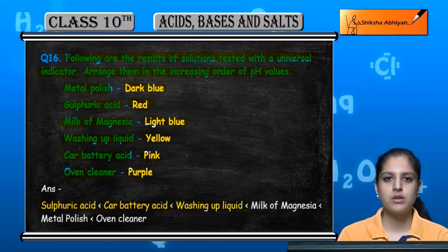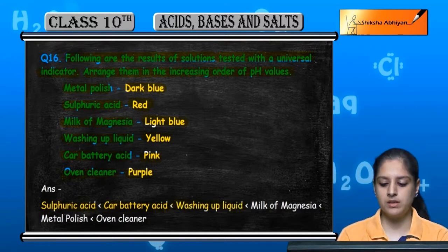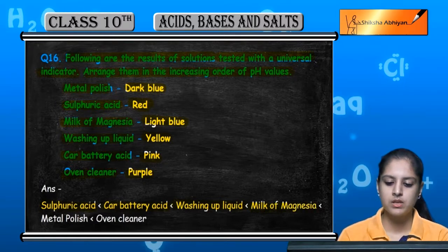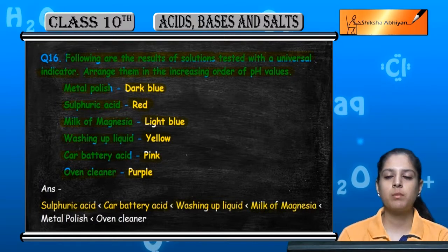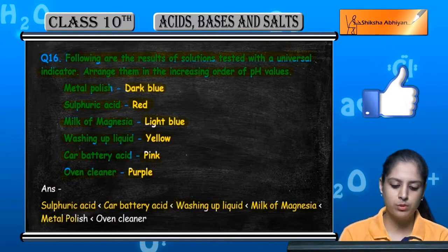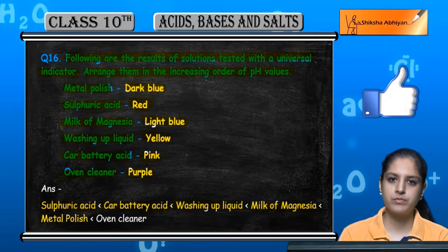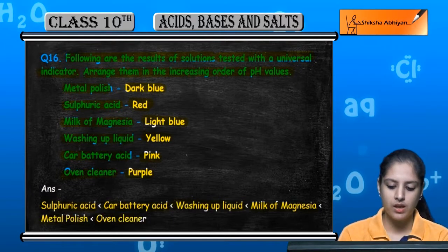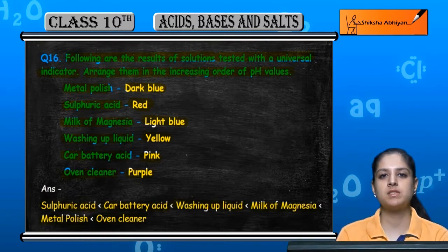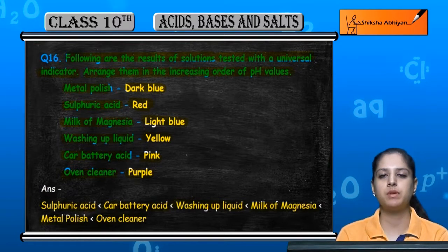After that comes yellow, which is washing up liquid — it is slightly acidic. Then milk of magnesia, which is slightly basic. Then metal polish with dark blue color, and oven cleaner with purple color — both are basic — completing the increasing order of pH.